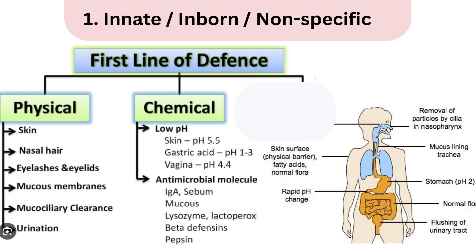Under the first line of defense, physical barriers like skin, nasal hair, mucous membrane, sweat, and saliva help in physically blocking or flushing out pathogens. Chemical barriers, for example acidic pH of the stomach and lysozyme in saliva and tears, help destroy microbes before they can cause harm.